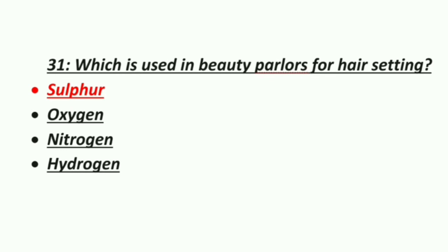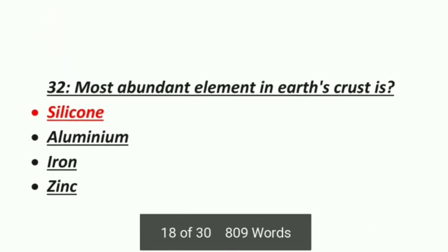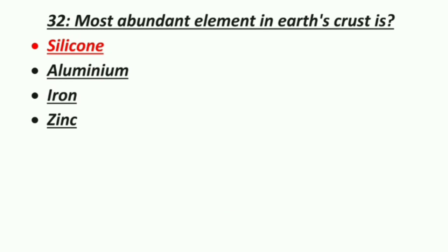Thirty-first MCQ: which is used in beauty parlors for hair setting? Option 1: Sulfur, Option 2: Oxygen, Option 3: Nitrogen, Option 4: Hydrogen. The correct answer is sulfur — sulfur is used in beauty parlors for hair setting.